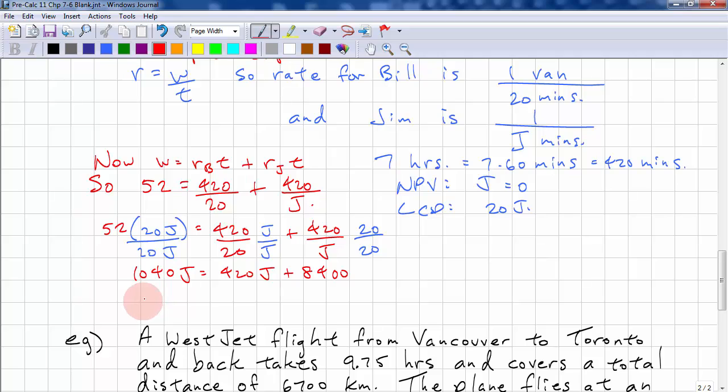Move the J's over to one side. So we have 620J equals 8400. Now we can calculate his rate. And that's 8400 over 620. And that is approximately 13.5 minutes to wash a van. And it's not the NPV.